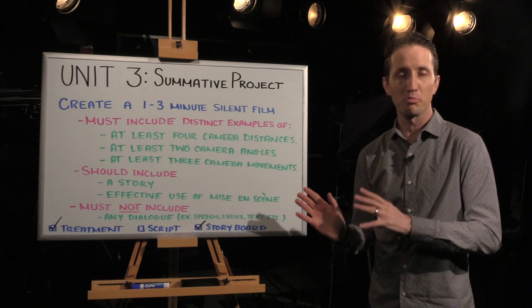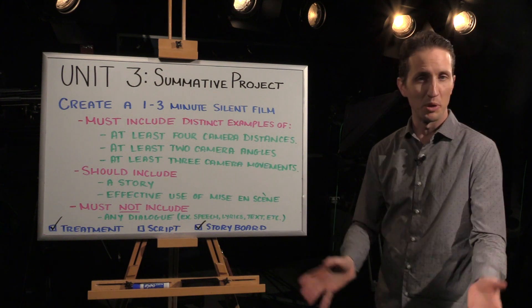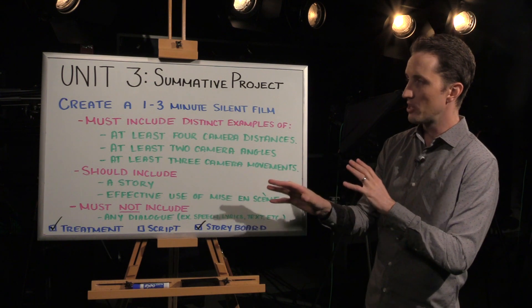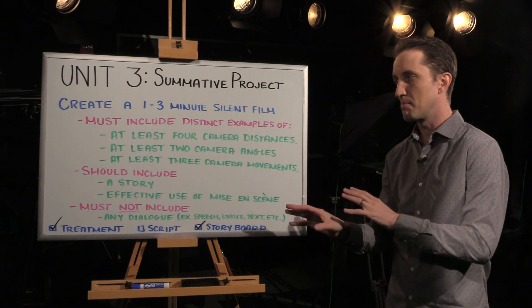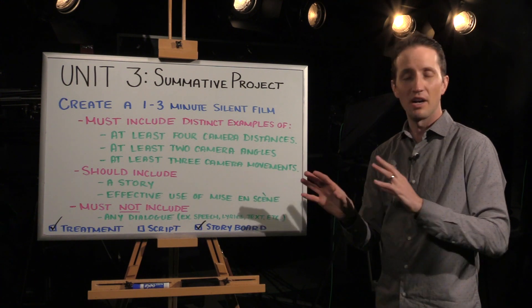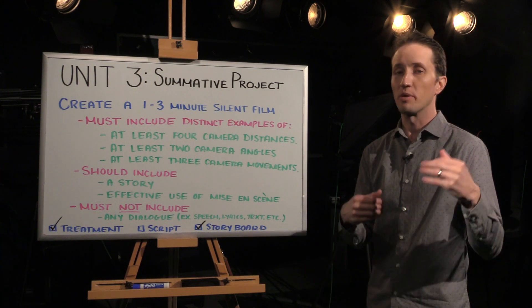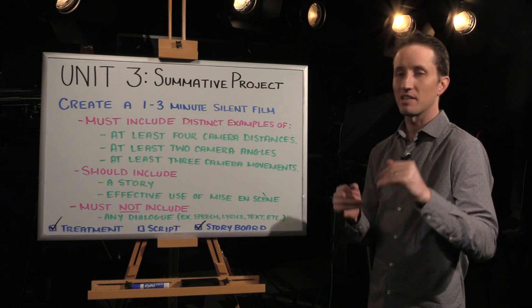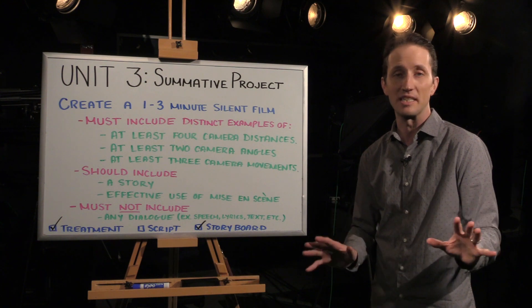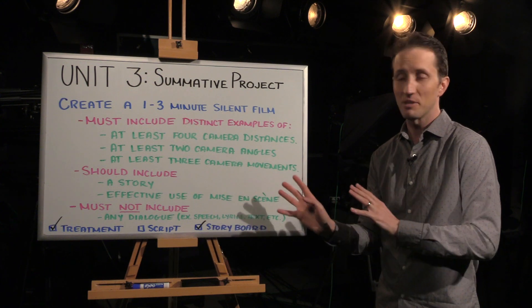So this is your summative project for this unit. This is where you're going to take all the information that you've learned, put it all together, and show me what you learned. For this assignment, you guys are going to create a 1 to 3 minute silent film. You must include distinct examples of at least 4 different camera distances — extreme wide shots, wide shots, medium shots, medium close-ups, close-ups, and extreme close-ups. I want to see at least 4 distinct examples of camera distances.